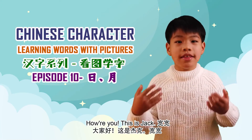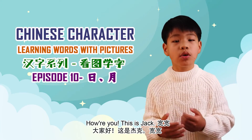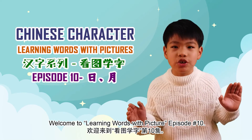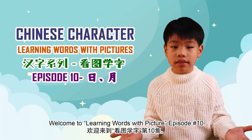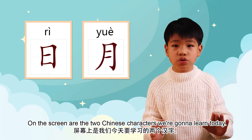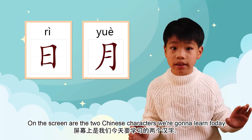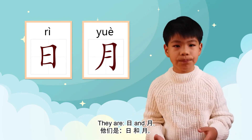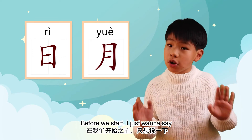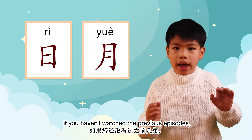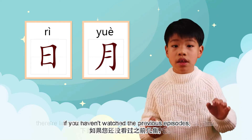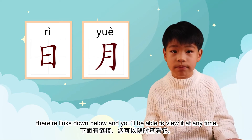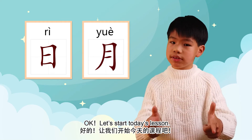How are you? This is Jack Kwan Kwan. Welcome to Learning Words with Pictures, episode number 10. On the screen are the two Chinese characters we're going to learn today. They are 日 and 月. Before we start, if you haven't watched the previous episodes, there are links down below and you'll be able to view them at any time. Let's start today's lesson.